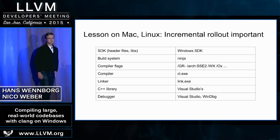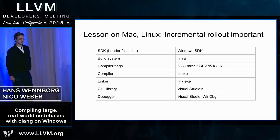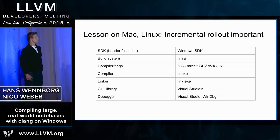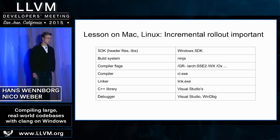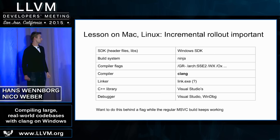One thing we learned during the Mac and Linux work is that incremental rollout is extremely important. We currently use the Windows SDK to build Chrome on Windows, and we want to keep using that — linking against the Visual Studio libraries, keeping our build system, and keeping all the compiler flags we currently use, which are the Visual Studio compiler-style flags like /GR to disable RTTI, /arch, and so on. At least for development, we also want to keep using the Visual Studio linker and debugger. Ideally, we just swap out the compiler on one bot, while all the normal bots keep building with the normal Visual Studio compiler, and then we work on Clang CL.